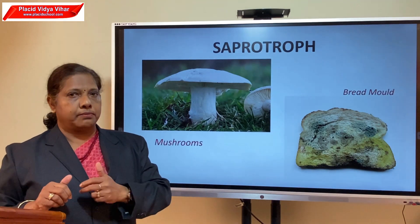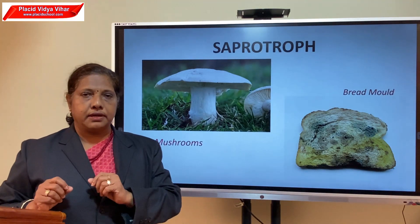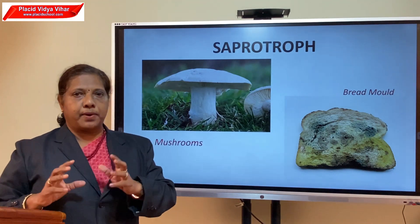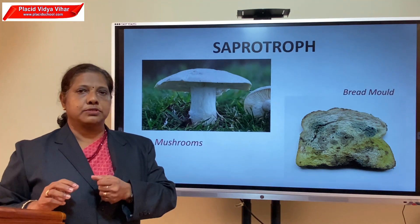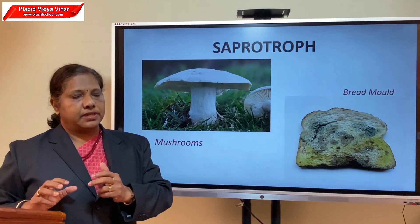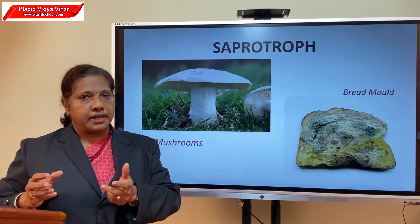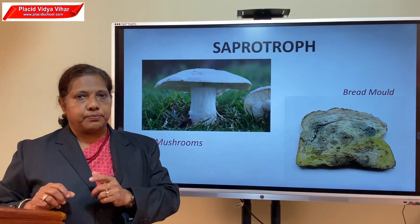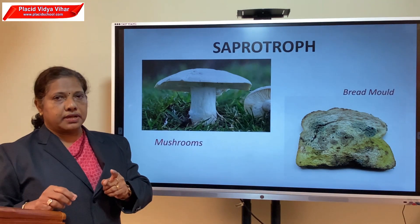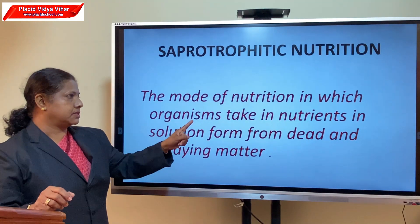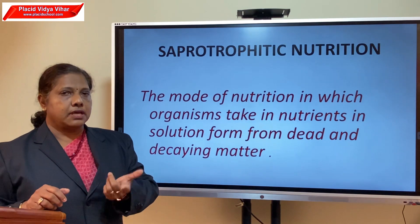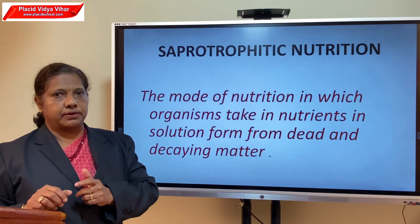We can do an activity for making bread mould: take a piece of bread, moisten it with water, and leave it in a humid, warm condition for 2–3 days. You will see fluffy patches growing on the bread. Under a microscope or hand lens, you can see cotton-like threads — white, green, or brown — spreading on the bread. Organisms that derive their nutrition from dead and decaying matter in solution form are called saprotrophs, and this mode is called saprophytic nutrition — a type of heterotrophic nutrition.